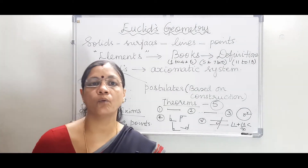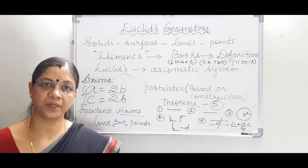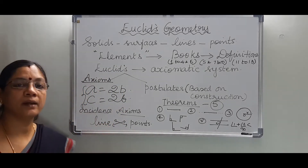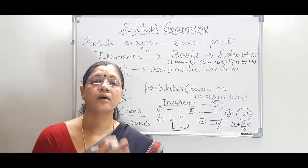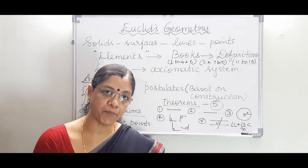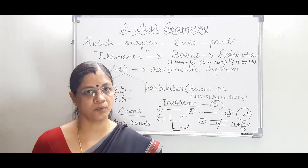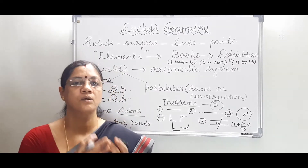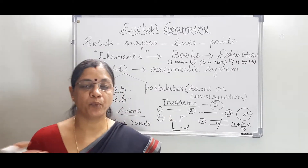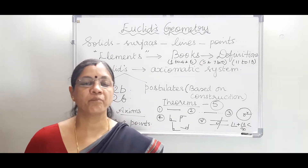What do those incidence axioms tell us? The first one is: there are infinitely many points in a line. We accept this even now. So there are infinitely many points in a line.